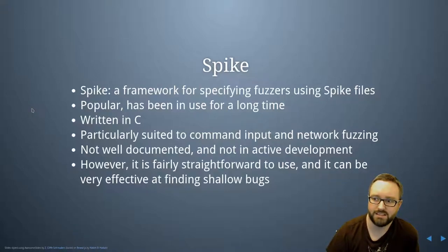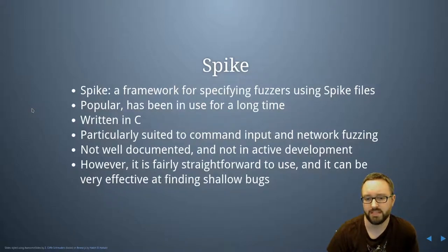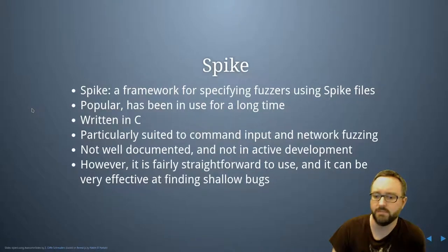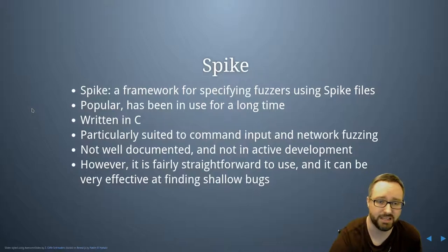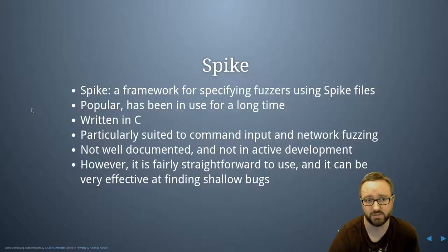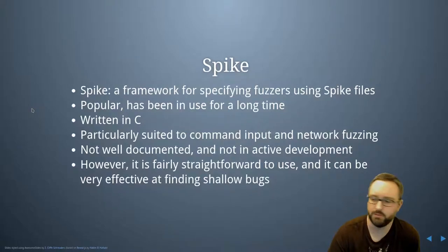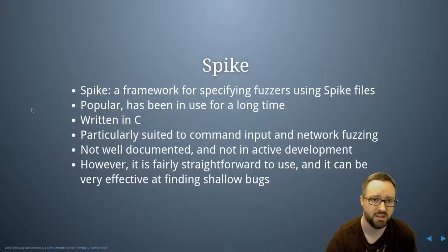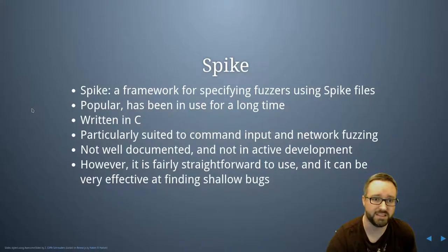Spike is a framework for specifying fuzzers using Spike files. It's quite popular, has been in use for a long time, and was written in C. It's particularly suited to command-line input and network fuzzing. Unfortunately, it's not well documented — the documentation is pretty terrible — and the best way to learn it is to look at existing Spike scripts. It's not actively under development, but it's fairly straightforward and effective at finding shallow bugs, with a C-looking specification language.